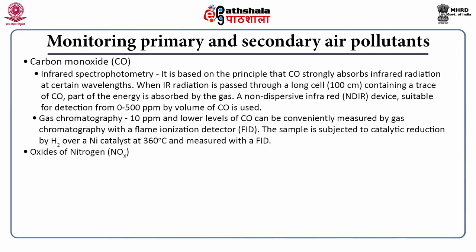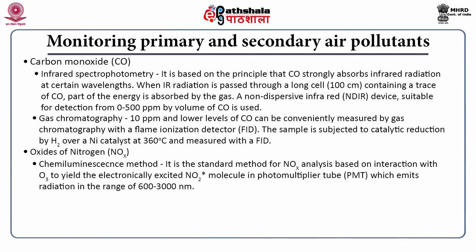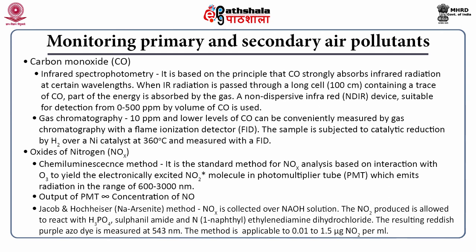NOx (oxides of nitrogen) is measured mainly by the chemiluminescence method — the standard method for NOx analysis — based on interaction with ozone to yield electronically excited NO₂ molecules in a photomultiplier tube, which emits radiation in the range of 600 to 3000 nanometers. The photomultiplier tube output is proportional to the concentration of NO. Another method is the Jacob-Hochheiser (sodium arsenite) method: NOx is collected over NaOH solution; the NO₂ produced reacts with H₃PO₄ (phosphoric acid), sulfanilamide and N-1-naphthylethylenediamine dihydrochloride, producing a reddish-purple azo dye measured at 543 nm. This method is applicable to 0.01 to 1.5 µg NO₂ per ml.